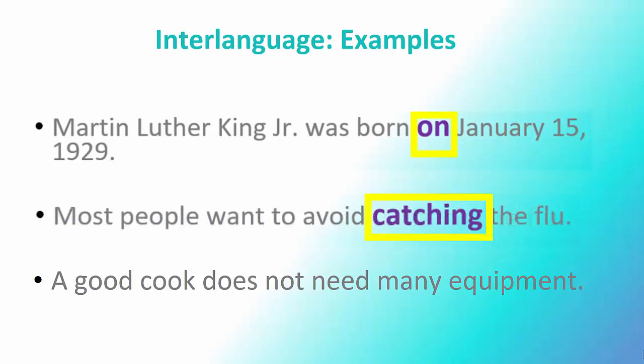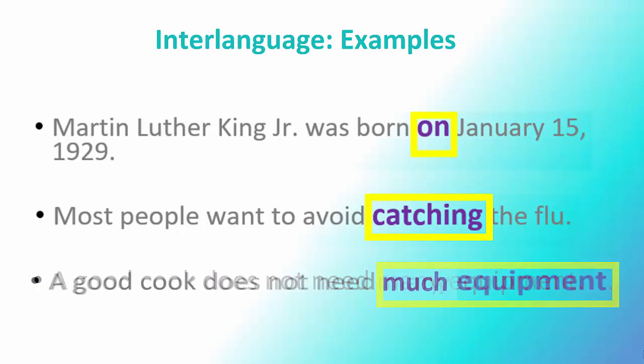In our second example: 'Most people want to avoid to catch the flu.' The correction is that certain verbs like 'avoid' must be followed by a gerund — the -ing form — not an infinitive. In our final interlanguage example, the correction is that 'equipment' is a non-count noun and should not be used as a plural.